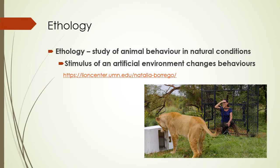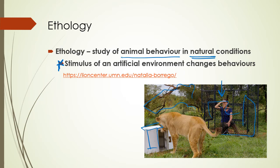Finally, ethology. Ethology is the study of animal behavior, ideally in natural conditions, because an artificial environment can change the behaviors of organisms and make them harder to study. Scientist Natalia Borrego studies lions — as much as she can she tries to be just an observer. The lions are in a habitat similar to their natural environment, but she also makes boxes and puts meat in them, trying to figure out if lions can learn and then teach each other how to get the meat out. So sometimes even in ethology, which should be in natural conditions, we add some artificial pieces to introduce variables and make things interesting.